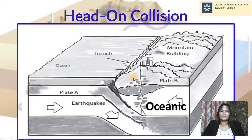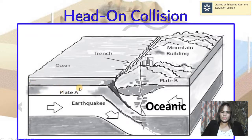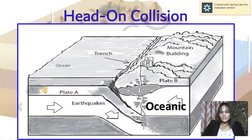Here we have the first one — the collision of an oceanic and continental convergence. As you can see, plate A is an oceanic plate and plate B is a continental plate. When they collide, plate A moves downward.